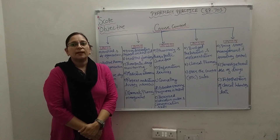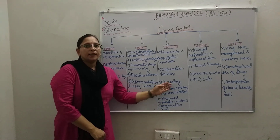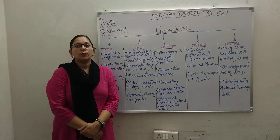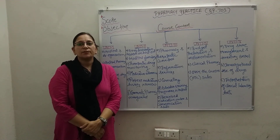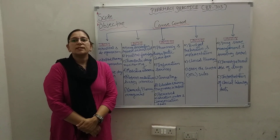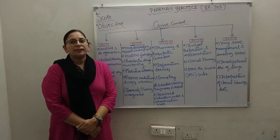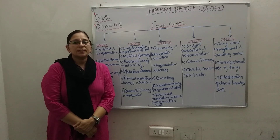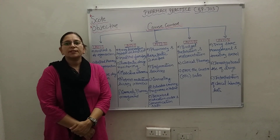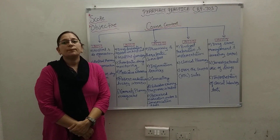In patient counseling, we will cover the definition of patient counseling and steps involved in patient counseling. In the fourth part, education and training programs in hospitals, we will learn about the role of the pharmacist in education and training, internal and external training programs, services to nursing homes, and the code of ethics for community pharmacy. In the last part, prescribed medication orders and communication skills, we will learn about prescribed medication orders, interpretation and legal requirements, and communication with prescribers and patients.